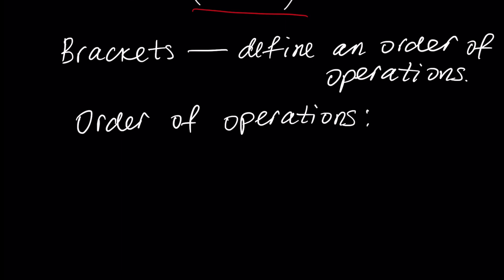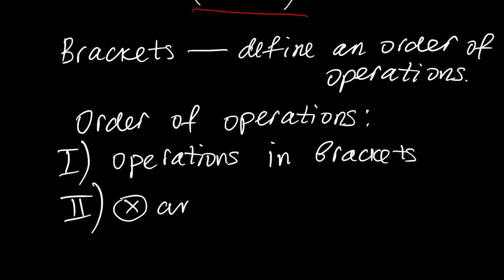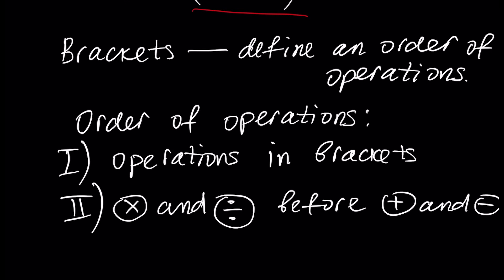Order of arithmetical operations: first, we perform operations in brackets, and second, we perform multiplication and division before plus and minus. Once again, when we have some example to calculate, the first operations in brackets are performed, and then multiplication and division are performed before plus and minus.